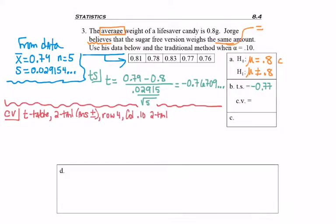Row 4, column 0.10, again, two-tailed. And I find the number 2.132, but since we said we had a two-tailed test, I take that number and don't change it. I just put plus or minus in front of 2.132.